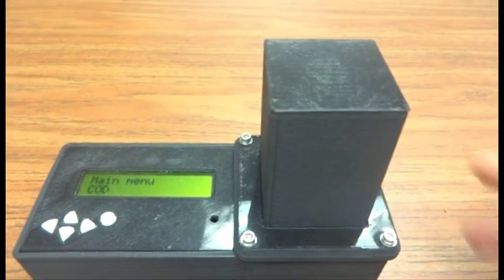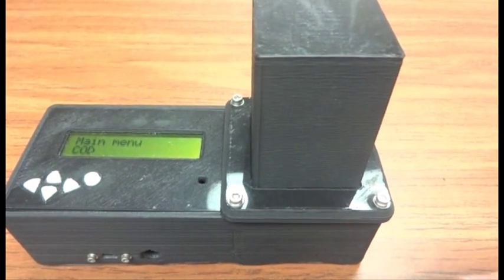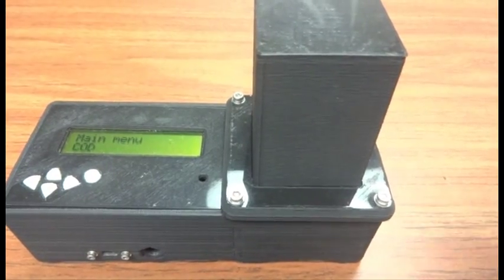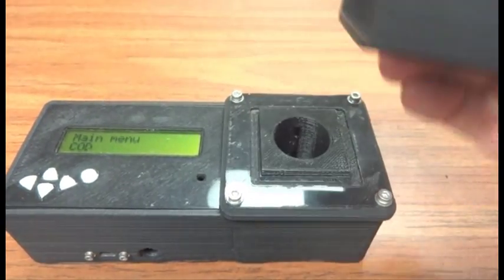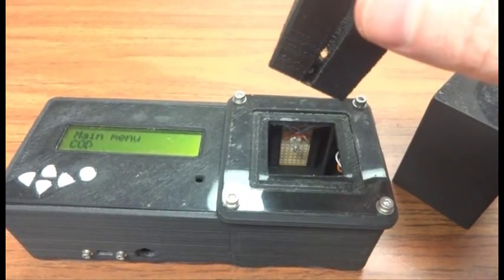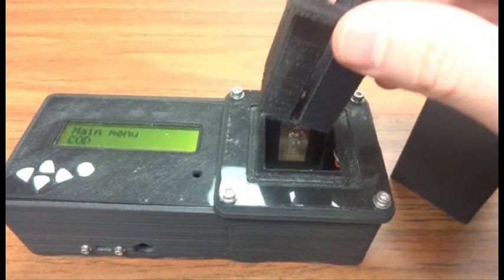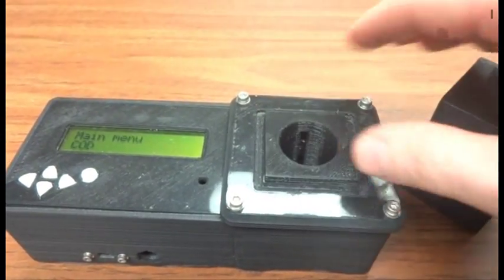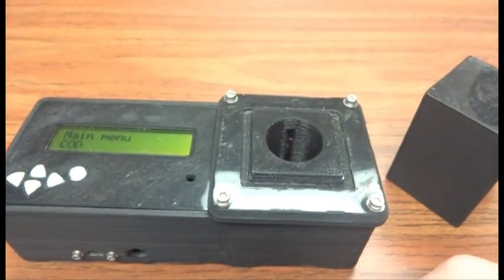For instance, we've used it in our lab to make an open source colorimeter that we've then turned into an open source nephelometer. This is something that you can take out into the field and do water quality testing. Everything about it is printable and customizable, so you can change the size of the cuvettes or the test tubes that you want to use it for.